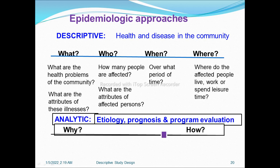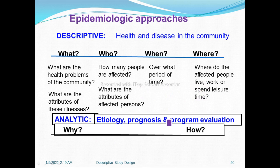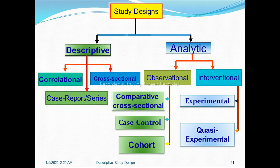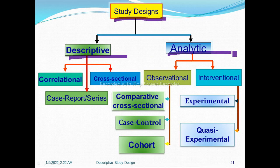Descriptive epidemiology addresses health and disease in the community: what, who, when, and where. It asks: what are the health problems of the community, how many people are affected, what are the activities of affected persons, over what period of time, and where do affected people live, work, or spend leisure time. Analytic epidemiology covers etiology, prognosis, and program evaluation — the why and how. Study designs can be divided into descriptive and analytic study designs.